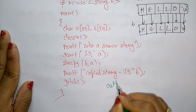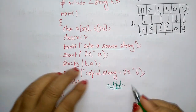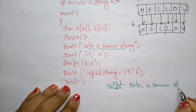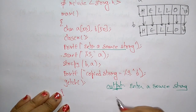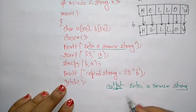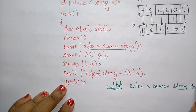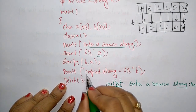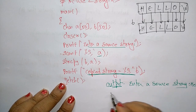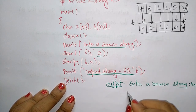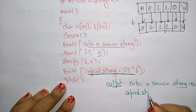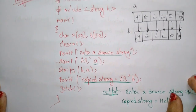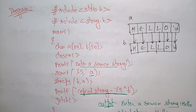The output of this program is: first it prompts "Enter a source string", the user enters "hello", and then it prints "Copied string = hello". So this is about the string copy function. Thank you.